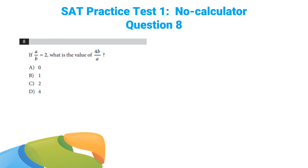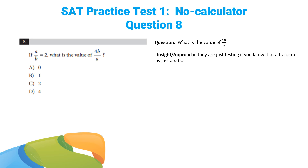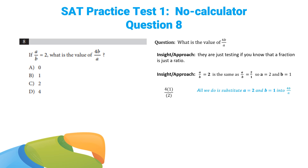Question 8: if A over B equals 2, what is the value of 4B over A? Whenever they give you two expressions in the question stem, they want you to find a way to combine them. A over B equals 2 is the same as A over B equals 2 over 1, so we can pretend A equals 2 and B equals 1, then shove those values into the equation. We put in 1 for B and 2 for A: 4 times 1 over 2 equals 2. Answer choice C.